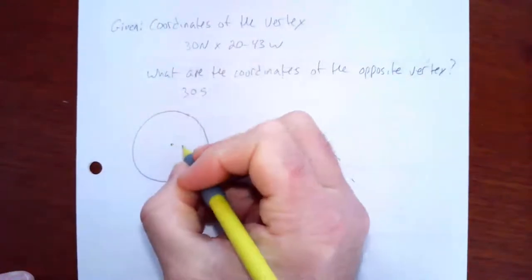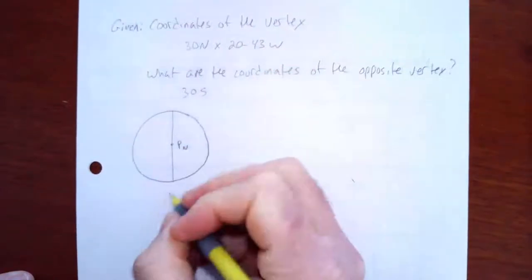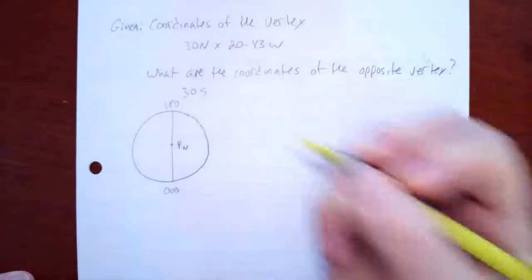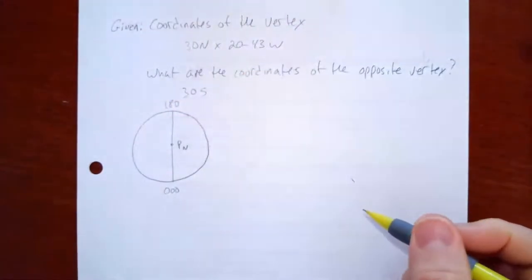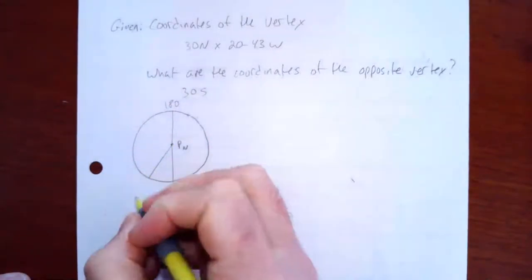So here is the north pole, and this line here represents, on this side is the prime meridian, and on this side is the date line. So essentially now, I'm just going to draw in a line that just generally represents my longitude of the vertex.